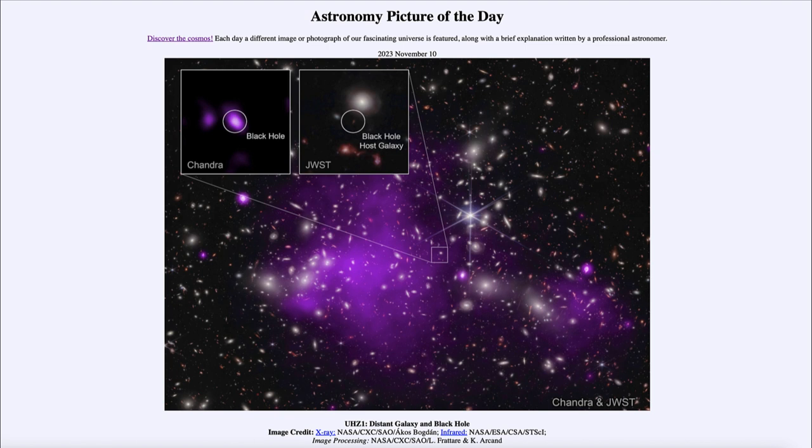Now how can we put that into perspective? Well, that's about three percent of the current age of the universe. So if the universe were a person that was a hundred years old, this would be something that we're seeing that occurred when they were three. So that's going way back to the very earliest history of the universe.